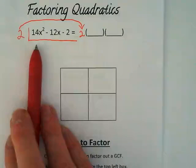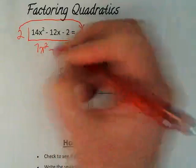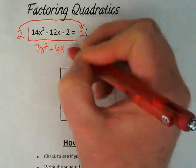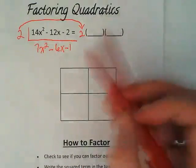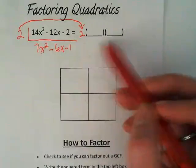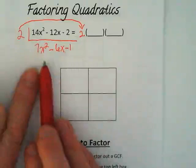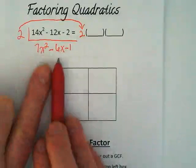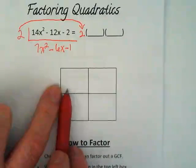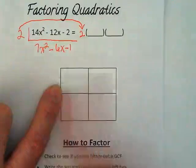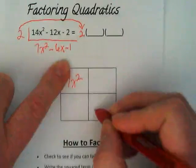What is 14x squared divided by 2? 7x squared. Minus 6x minus 1. So our answer is going to be 2 times 2 polynomials that are binomials that we're going to get from this. We now have 7x squared minus 6x minus 1. The 7x squared goes here. And the negative 1 goes here.